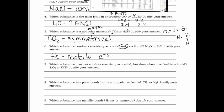Question seven: which substance does not conduct electricity as a solid but does when dissolved in liquid? This again describes something ionic. Silicon is a metalloid on the non-metal side, so it's covalent. KCl has a metal bonded to a non-metal, so it's definitely ionic. The answer is KCl, because it's ionic.